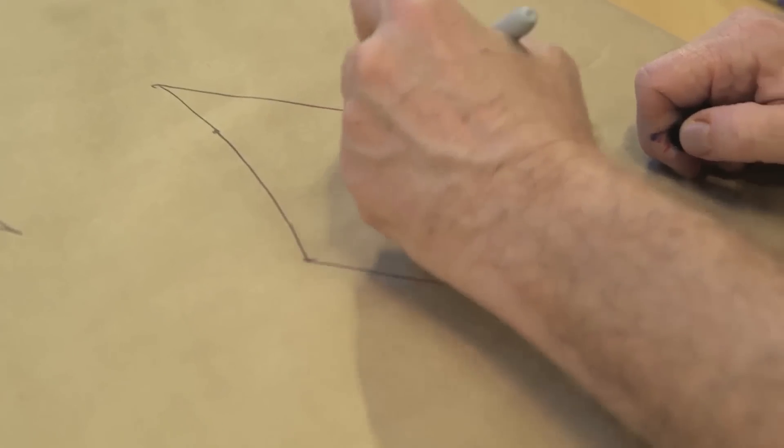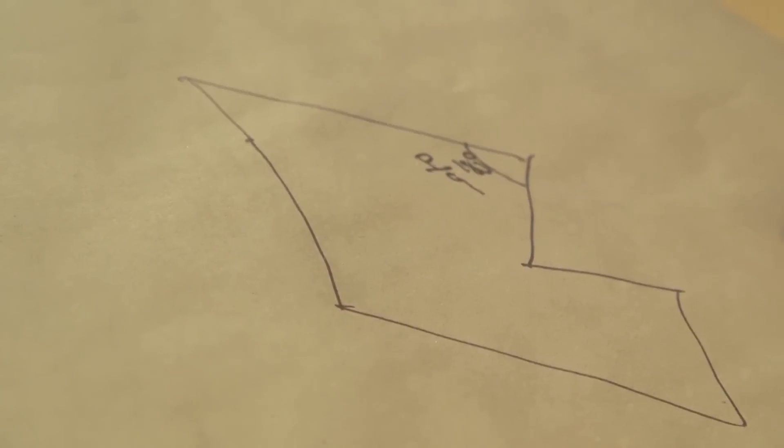and in fact, one can prove for any rational polygon, where all the angles are fractions of 180 degrees, or P over Q times 180 degrees. Again, I like to write it like that. You can always find a periodic orbit.